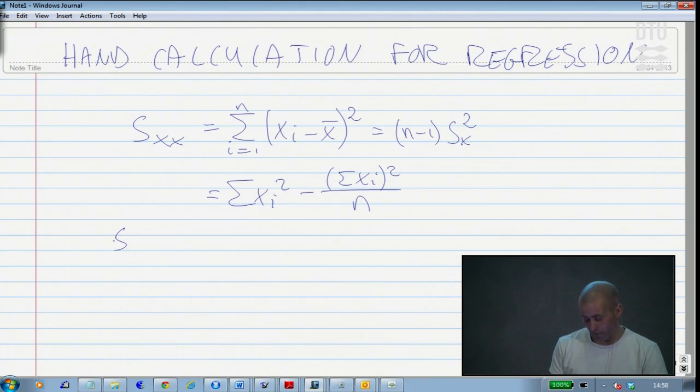The new thing here, if you want to do them by hand, is that a similar formula pops up for this covariance term or the cross product term, which, as you remember, by definition is the sum of the x deviancies multiplied by the y deviancies.